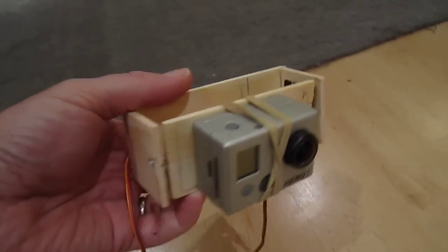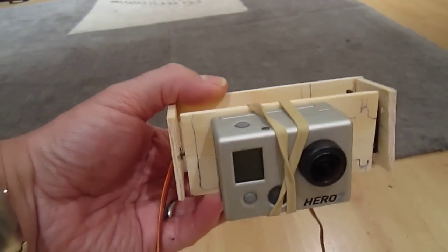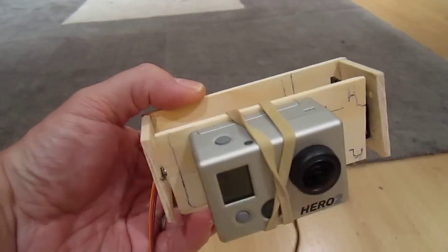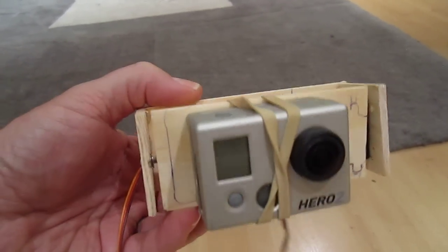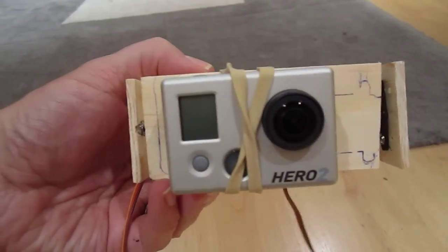And that way. So once I've got that attached to my copter, in theory as the copter moves around like this and obviously like that, it should keep the camera pointing pretty much straight forward.